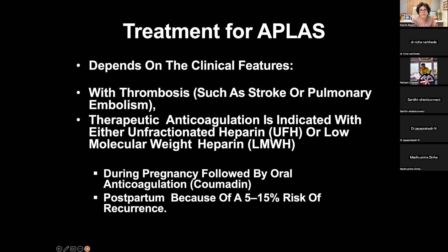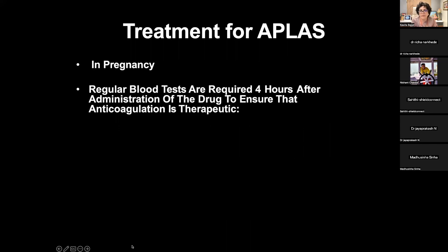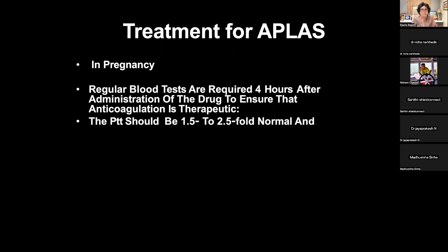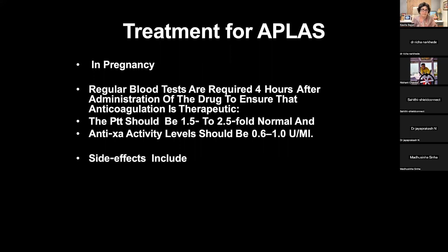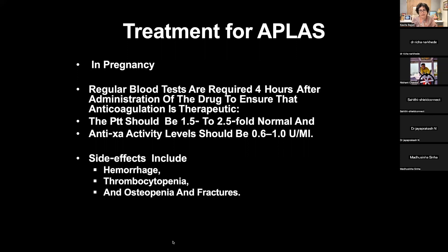If there is thrombosis such as stroke or pulmonary embolism, therapeutic anticoagulation is indicated with either unfractionated heparin or low molecular weight heparin during pregnancy, followed by oral anticoagulation if needed postpartum, given a five to ten percent risk of recurrence. During pregnancy, regular monitoring is required: PTT should be 1.5 to 2.4 times normal, and anti-Xa activity level should be 0.6 to 1.0 units. Side effects include hemorrhage, thrombocytopenia, osteopenia, and fractures.